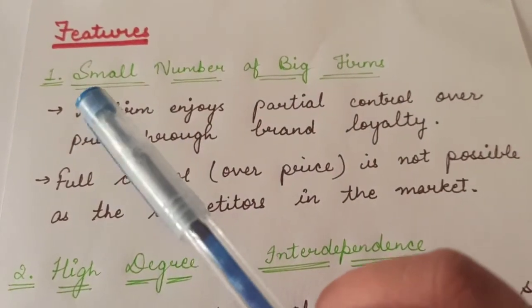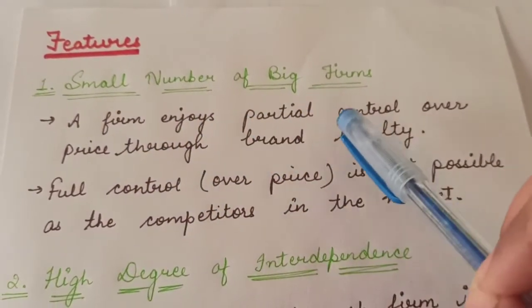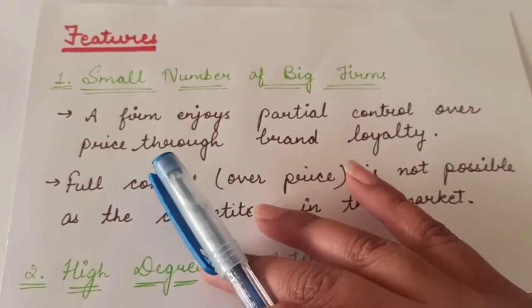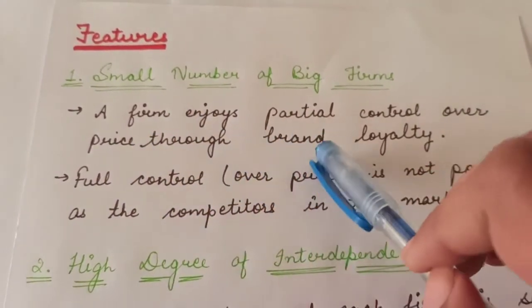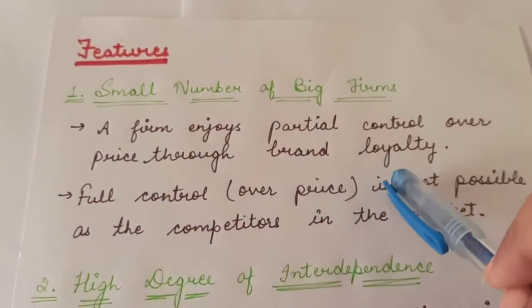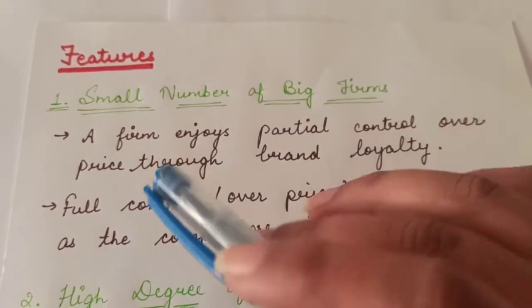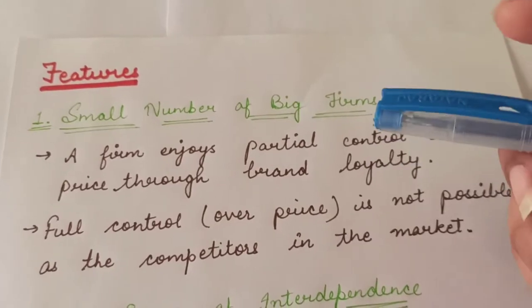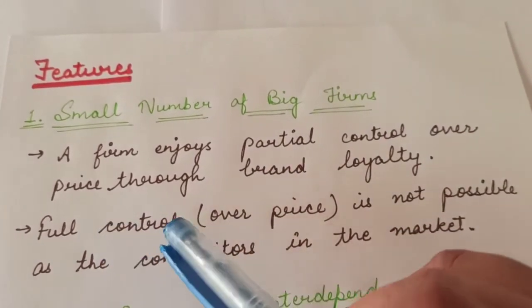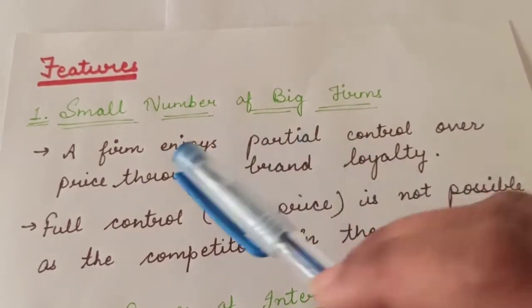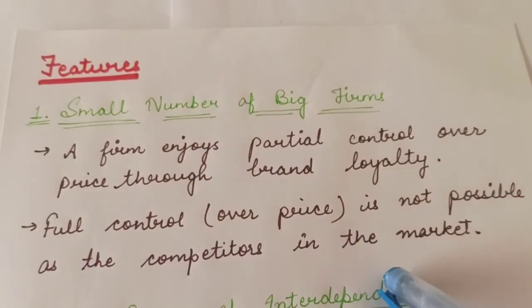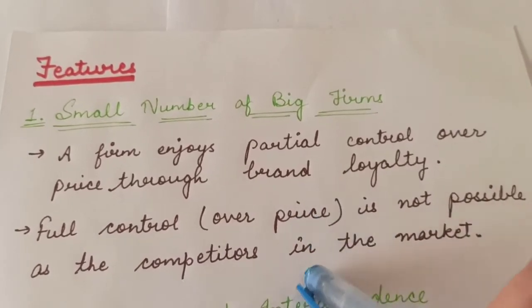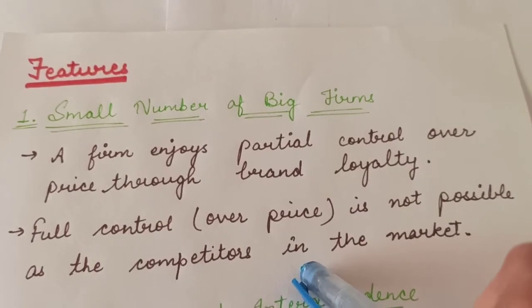The features of such a market are: first, small number of big firms. In such a market, there are a small number of big firms and a large number of buyers. Because of this, a firm enjoys partial control over the price through brand loyalty. They can control the price, but they cannot have full control over the price, as there are competitors in the market. That is why only one firm cannot have full control over the price.